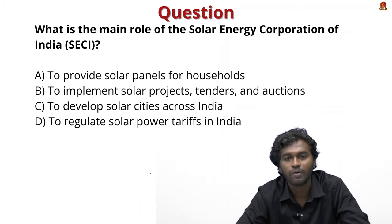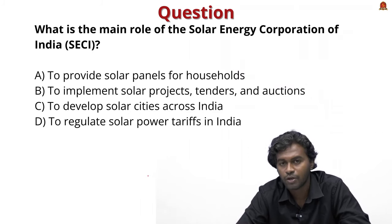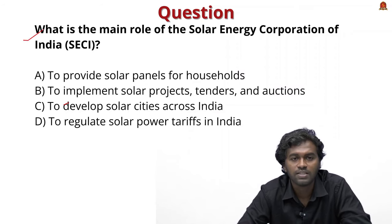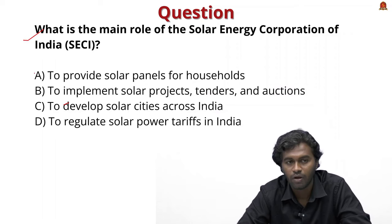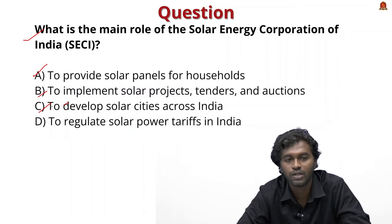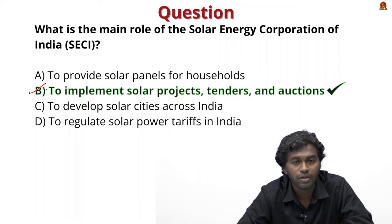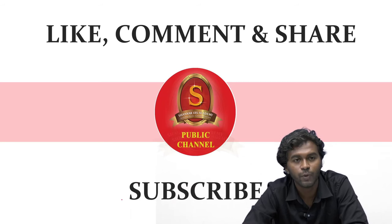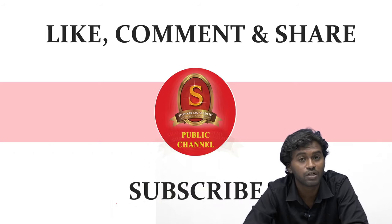In conclusion, we discussed the Pradhan Mantri Surya Ghar Muft Bijli Yojana, its innovative projects, objectives, and other key solar schemes in India. Try to answer this prelims question: 'What is the main role of the Solar Energy Corporation of India?' Option A: Provide solar panels for households. Option B: Implement solar project tenders and auctions. Option C: Develop solar cities across India. Option D: Regulate solar power tariffs. The correct answer is Option B. If you liked the video, hit the like button, comment your feedback, share with friends, subscribe, and hit the bell icon for updates. Thank you, have a nice day.